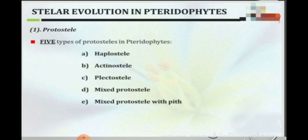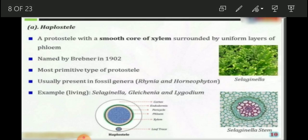Protostele is further classified into five types: haplostele, actinostele, plectostele, mixed protostele, and mixed protostele with pith. The first type is haplostele, which is the most primitive type of protostele. Here the central solid smooth core of xylem is surrounded by a layer of phloem. This type of stele is mainly found in Selaginella species.